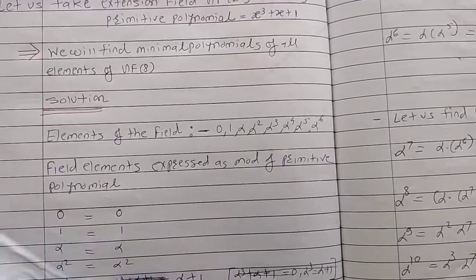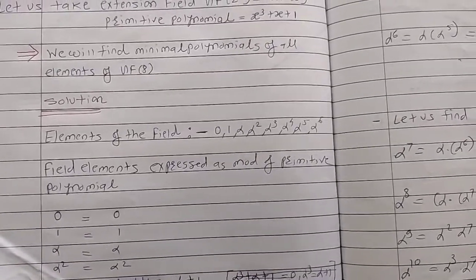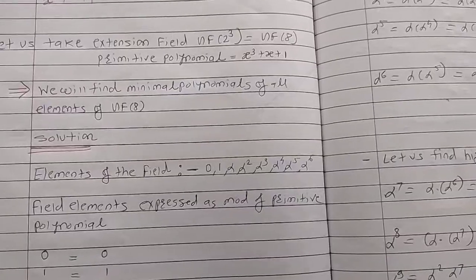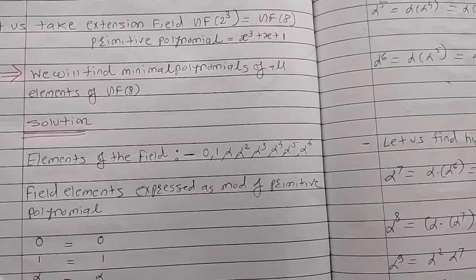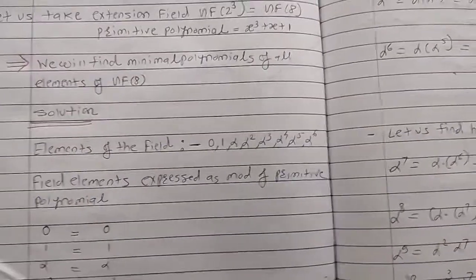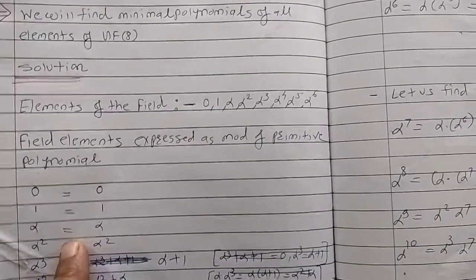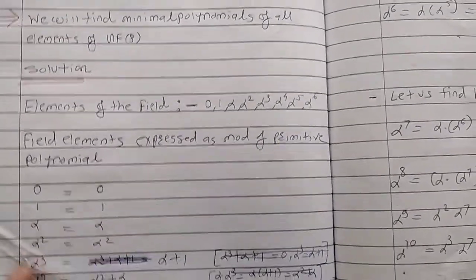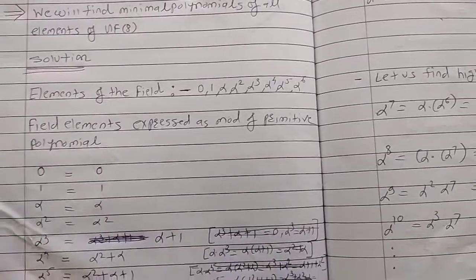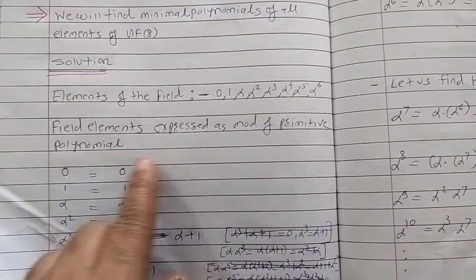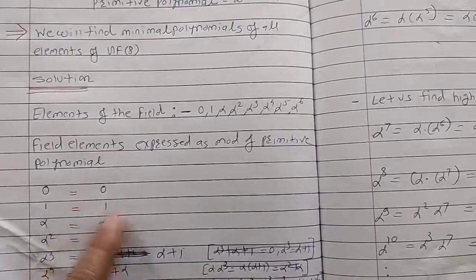Let us express the elements of GF(8) in terms of mod of the primitive polynomial. This part was also covered in one of the videos on this channel. So, find elements expressed as mod of primitive polynomial.